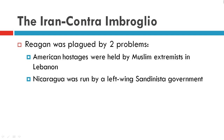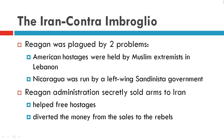Reagan had two big issues to deal with. First, there were American hostages being held by Muslim extremists in Lebanon. Secondly, Nicaragua was run by left-wing Sandinistas, and Congress had banned sending arms to the Nicaraguan rebels who were fighting them.